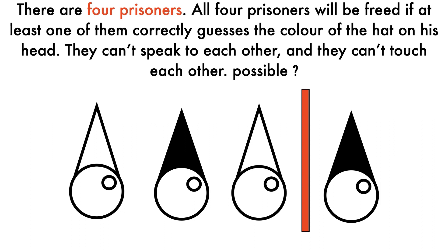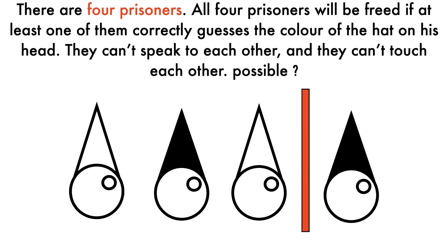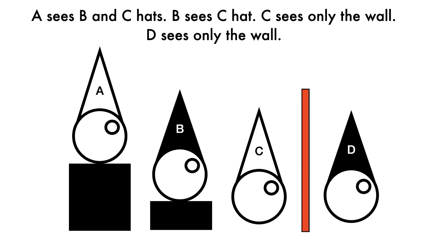There are four prisoners. All four will be freed if at least one of them correctly guesses the color of the hat on his head. They can't speak to or touch each other. If one gives a wrong answer or none can work out the answer, their sentences will be doubled. There are four hats — two white and two black. Each man has a hat placed on his head while blindfolded, then the blindfolds are removed. They cannot see their own hats, only the others'.